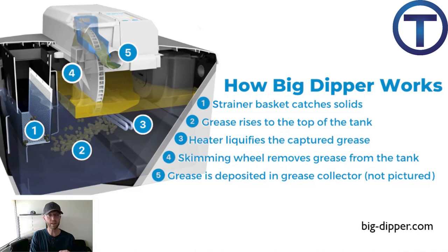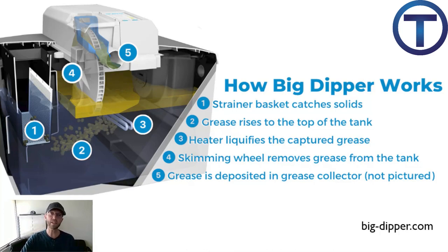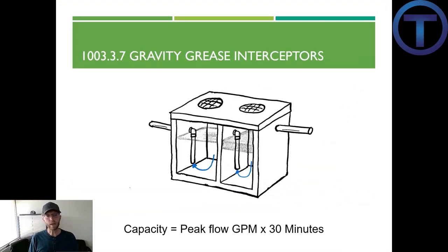What this device does is bring the fluid into the first chamber where a basket strainer catches all the solids — any food waste is caught there first. Then grease and liquid flow into the main chamber where the grease rises to the top by gravity, but it's encouraged and liquefied by a heating element, making it really liquid on top. From there, a skimming wheel pulls that grease off the top and puts it into a separate grease collector — an exterior tank you can use to haul the grease off. This is a great improvement over the gravity type where you just let the grease float and get rid of it periodically.